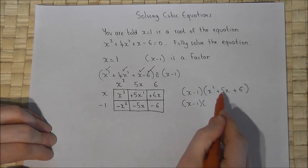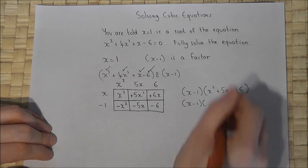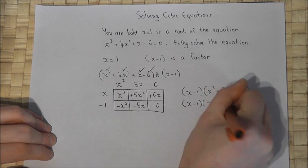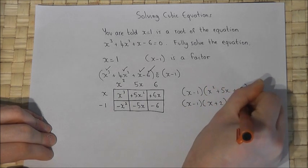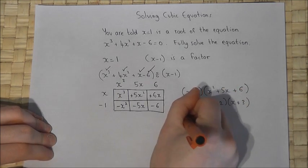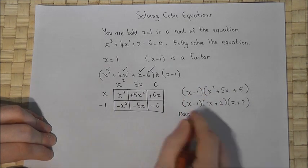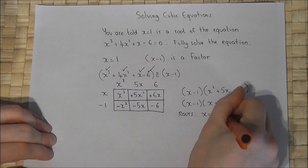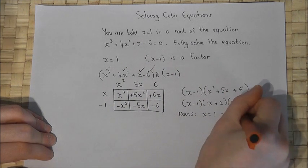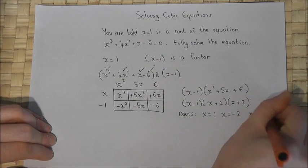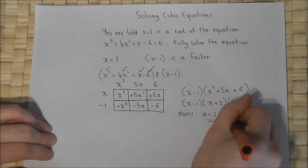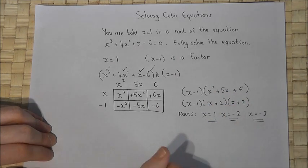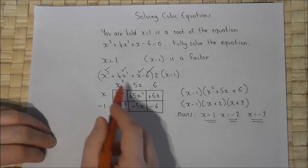There must be 2 and 3. 2 plus 3 is 5, 2 times 3 is 6. x plus 2, x plus 3. So the roots are x is plus 1, that was the one that was given to us, x equals minus 2, and x equals minus 3. We've therefore fully solved the cubic equation.